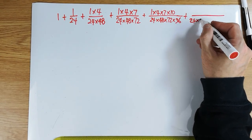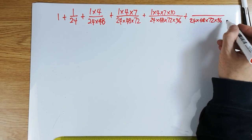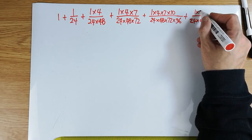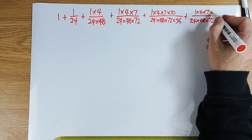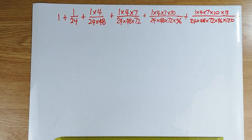It should be 24 times 48, 72, 96 times 120. And on the top, it would have been 1, 4, 7, 10, and then 13, and so on, forever.